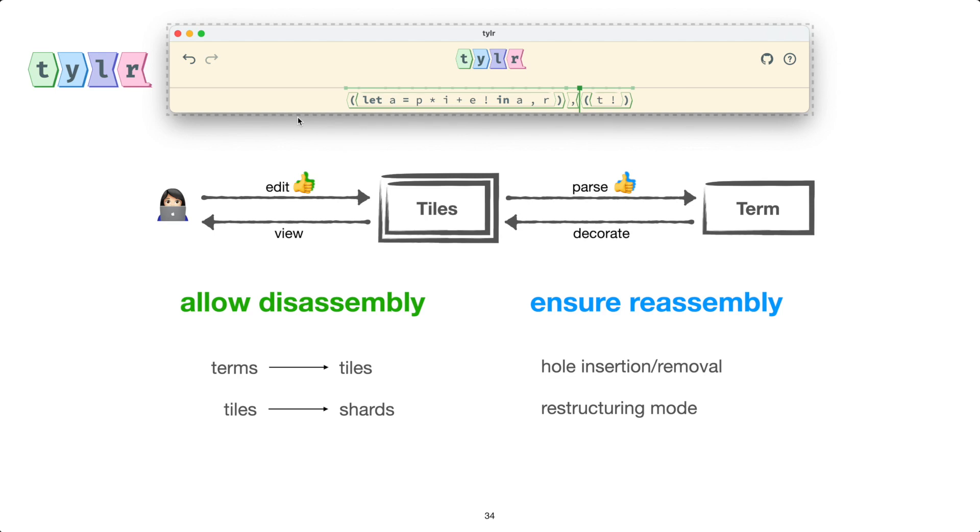We can then further disassemble tiles into shards when selecting and linearly rearrange those tiles and shards we've selected. And meanwhile, restructuring mode will ensure that we always put down those tiles and shards in reasonable positions. We think this approach gets the best of both worlds of text editing and term-based editing.